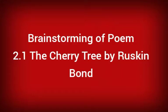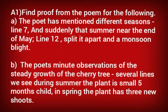Let us now discuss the brainstorming of the poem 2.1, 'The Cherry Tree' by Ruskin Bond. The first question is: find proof from the poem for the following. Sub-question A: the poet has mentioned different seasons.